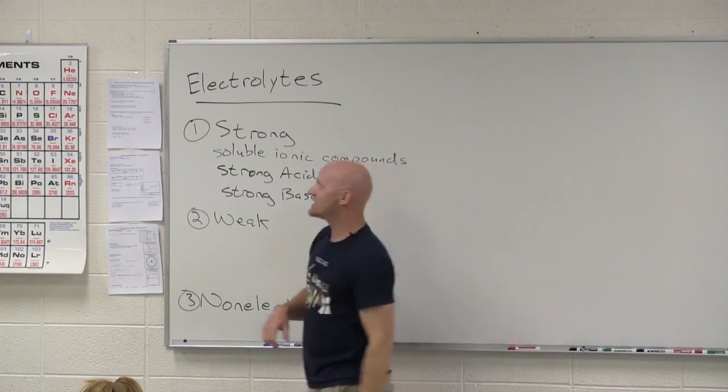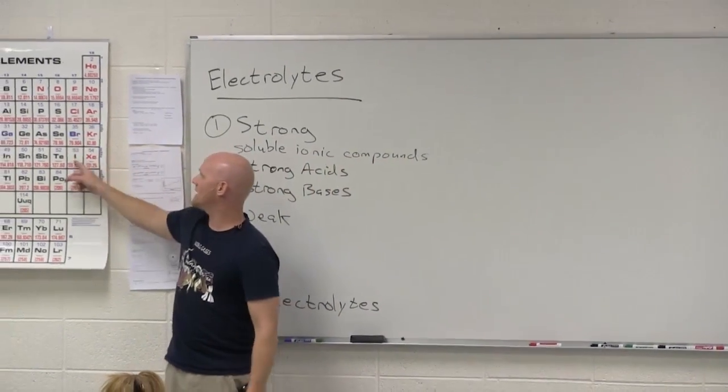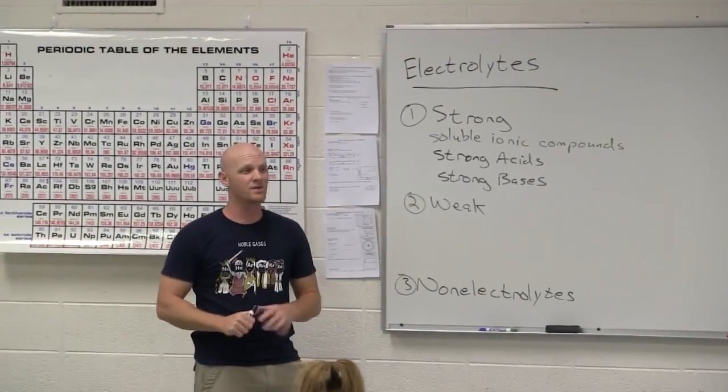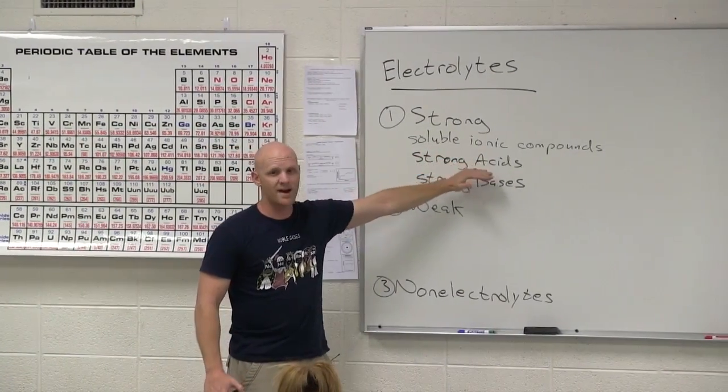They're on your handout there. So you've got HCl, HBr, HI, HNO3, H2SO4, HClO4, HClO3. They're all written on your handout already. So they are strong acids.